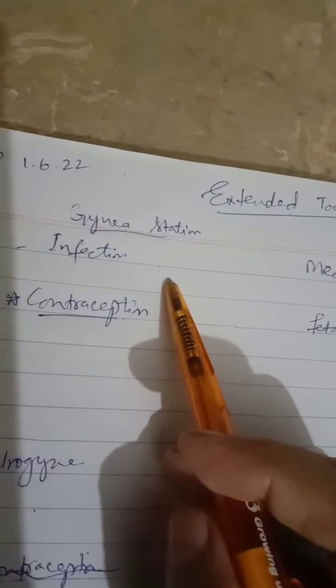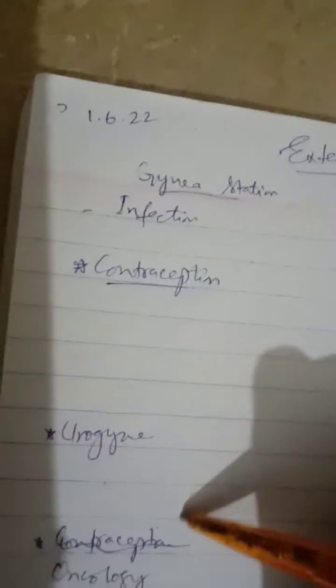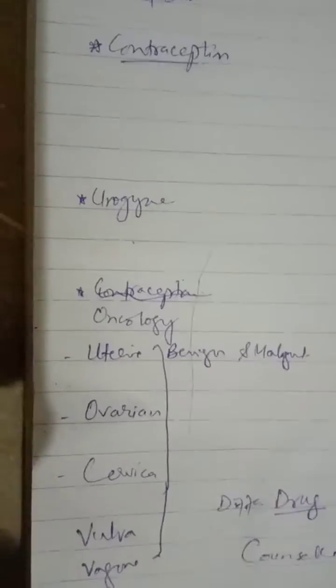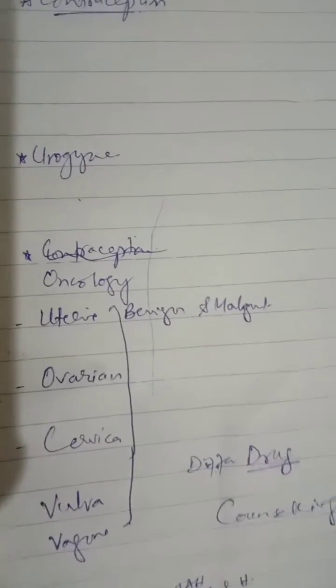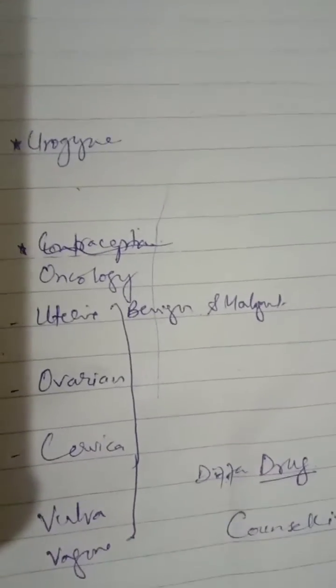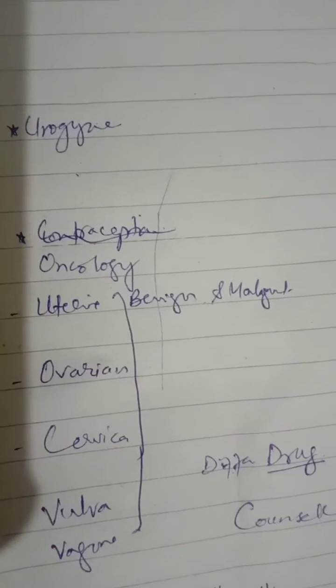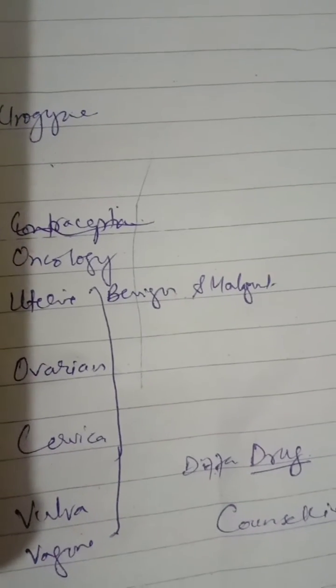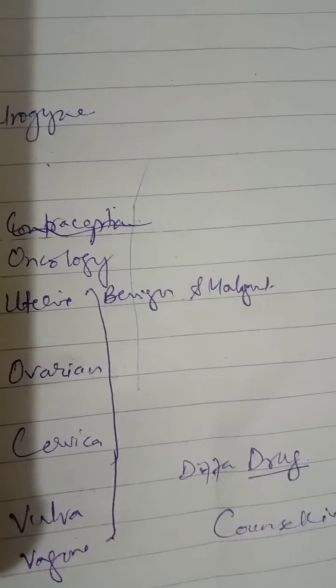Gynae includes infections, contraception, urogynae, and oncology. Oncology includes uterine, ovarian, cervical, vulval, vaginal, CIN and VIN — both malignant conditions.